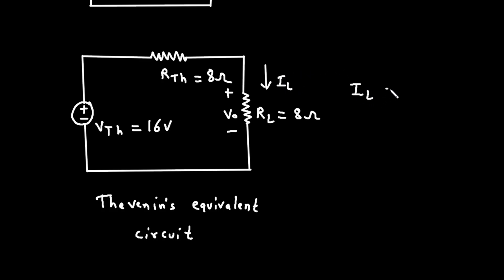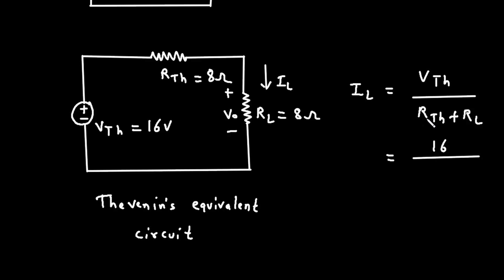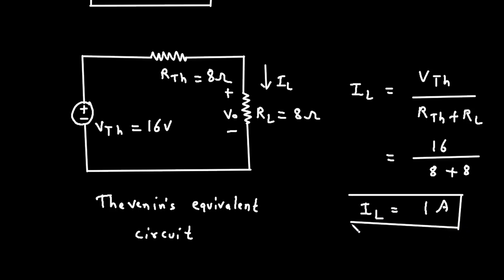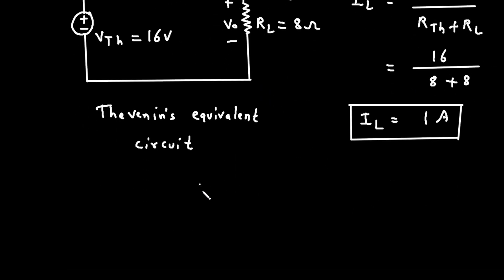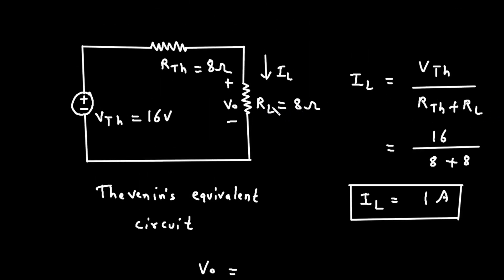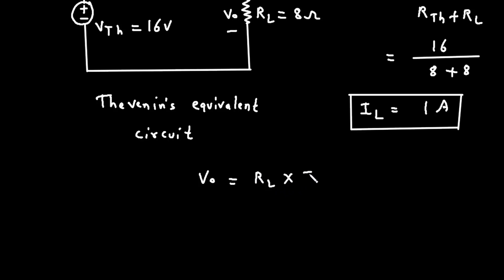Now to find the value of IL, there is a formula: IL is equal to VTH divided by RTH plus RL. This is simple Ohm's law — voltage divided by resistance. So the value of VTH is 16, divided by RTH value 8 plus RL value 8. So 16 divided by 16 is 1 ampere. But here we have to find the value of V0. V0 is equal to RL into IL — we multiply current and resistance to get voltage. So V0 is equal to 8 ohm into 1 ampere, therefore V0 is equal to 8 volt.